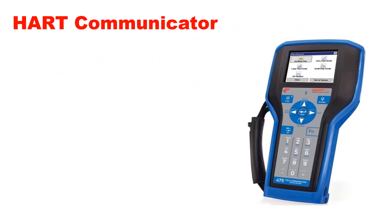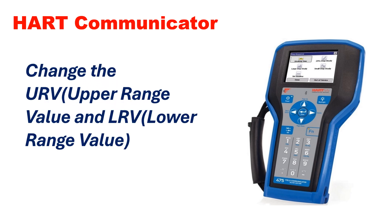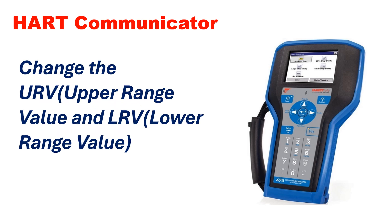The fourth function of Heart Communicator is that you can change the URV (upper range value) and LRV (lower range value) of an instrument. This means you can change the range of any HART-enabled instrument with the help of Heart Communicator.